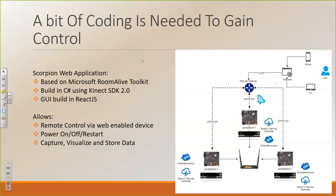We also built the platform frame and sensor mounts ourselves, though you could have a local fab shop build them. On top of the hardware, we had to create software to run the platform — we called this the Scorpion web application. It's based on the Microsoft Room Alive toolkit, built in C-sharp using the Kinect SDK, with the GUI built in React JS. Basically, this allowed us to take any web-enabled device — we just used a cell phone — connect to the platform, turn it off and on, capture data, visualize that data in the field, and store it.